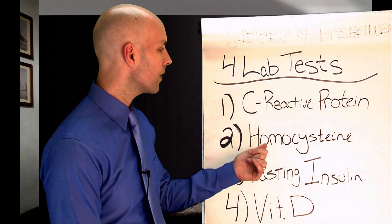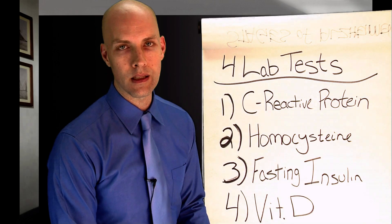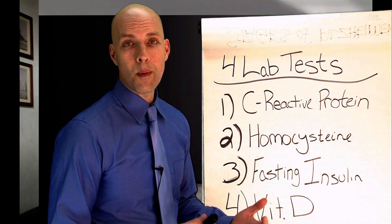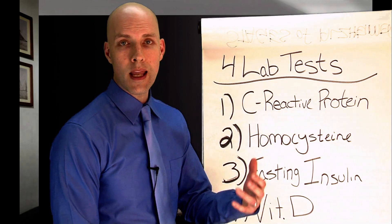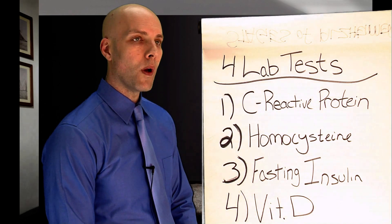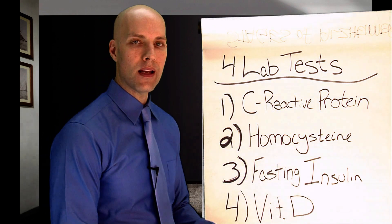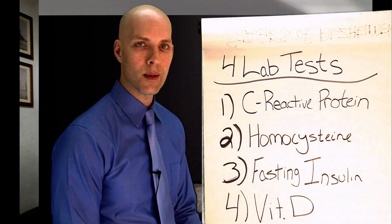So we have C-reactive protein, homocysteine, and then the next one is fasting insulin. Insulin resistance is a big issue in this country and we know diabetes is on the rise. It's an epidemic. So we want to stay on top of fasting insulin because it's a better indicator of insulin resistance in the body.